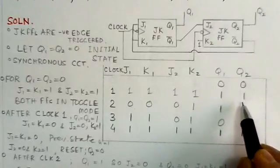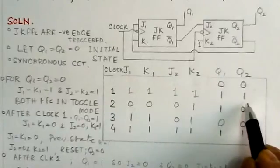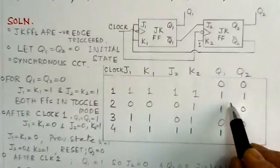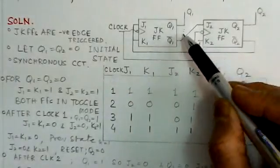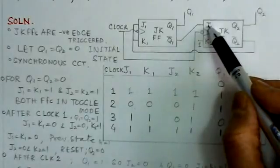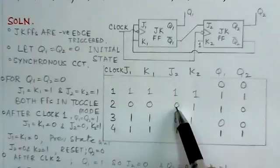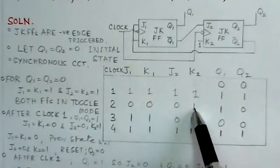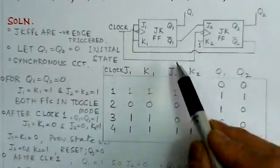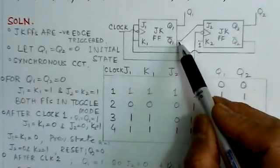When Q1=1, Q1-bar is zero, so J2=0 and K2=1. This puts the second flip-flop into reset mode.